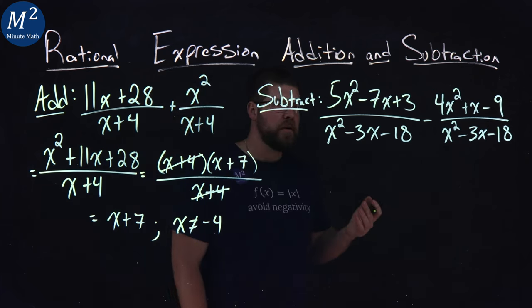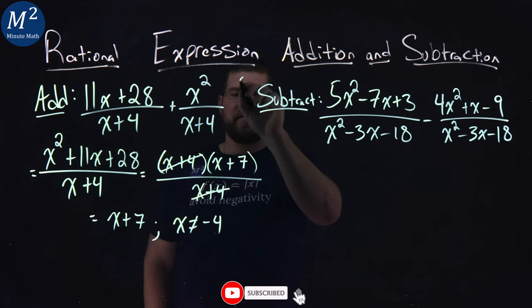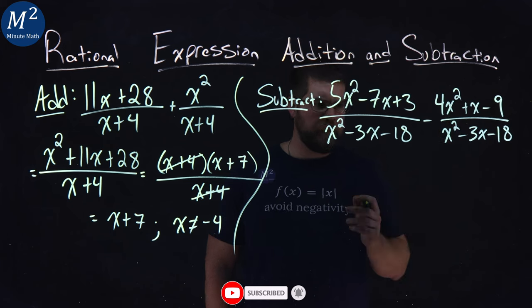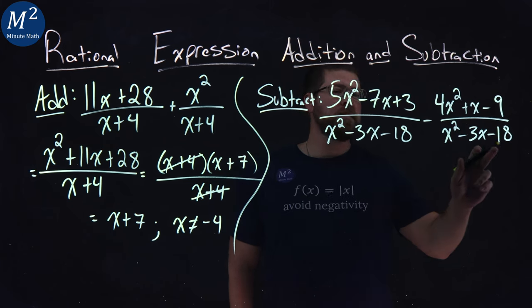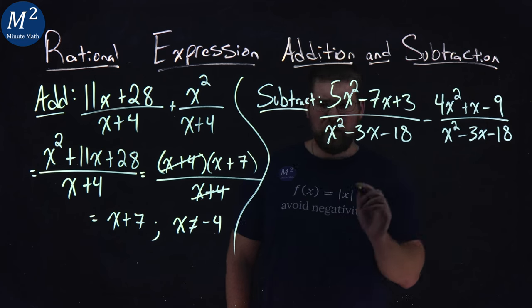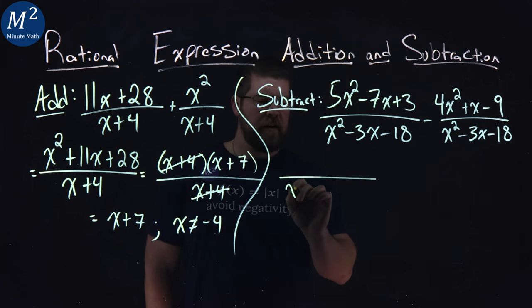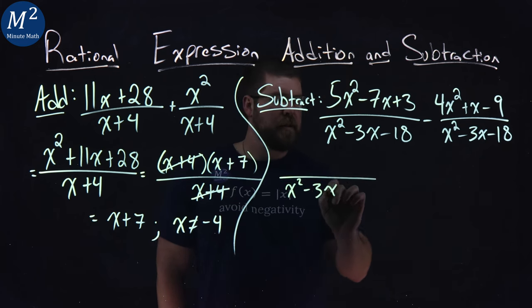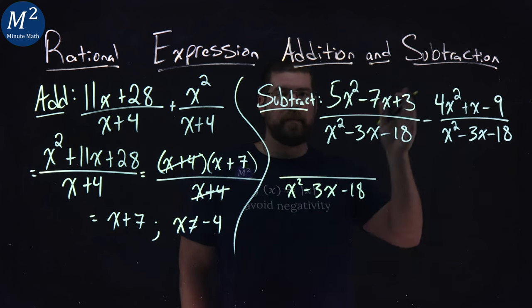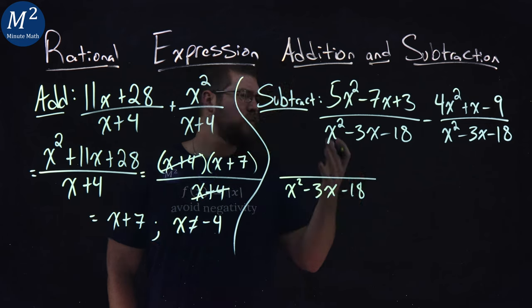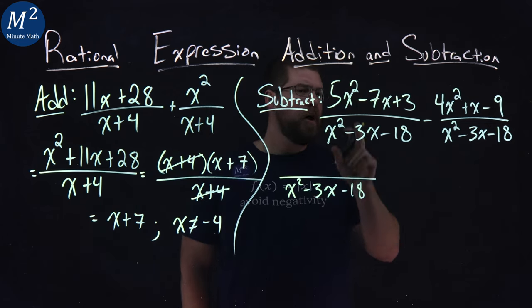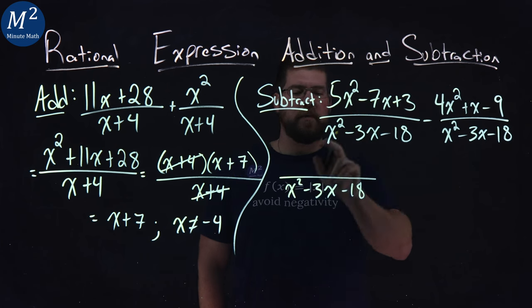Now subtraction process is basically the same except for subtraction instead of addition. Notice again we have the same denominator in both rational expressions. So that same denominator can stay here, x squared minus 3x minus 18, and we need to combine the numerator. Now you can do it two steps or one step. I like to do it one step if I can. We'll take our time.